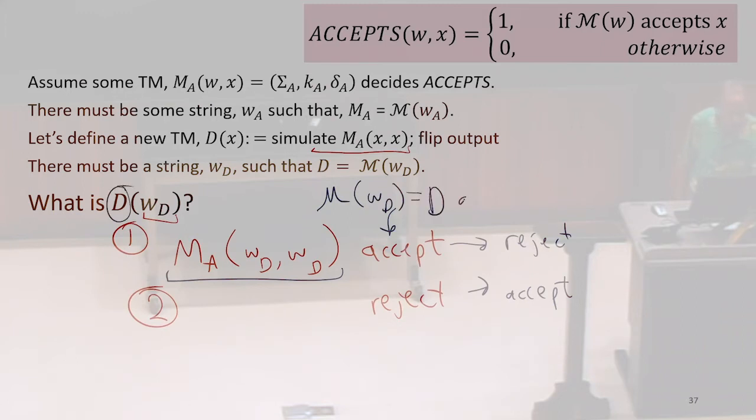That's how we defined it, accepts WD. That's what X is here. But what our machine does in that case is reject. So that doesn't make sense. It has to do the opposite of what it actually does.